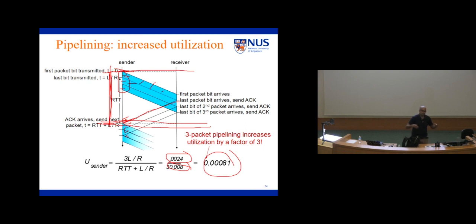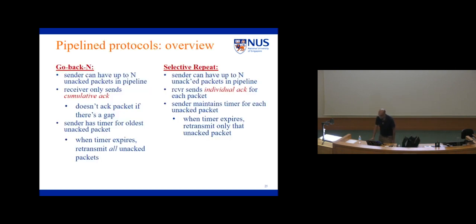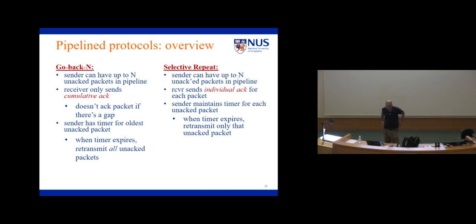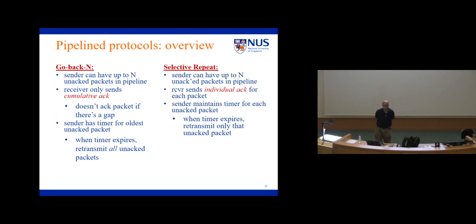When it comes to actual protocols based on pipelining, there are two main families. One is called go-back-N and the other is called selective repeat. In both, I can define some number N, and I say that the sender can have at most N unacknowledged packets at any point. Beyond that, it cannot send. Once it gets an acknowledgement, it can send a new one, but at any point, not more than N. That's the common part in both protocols.